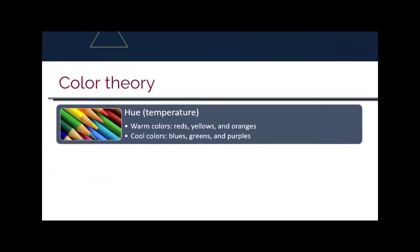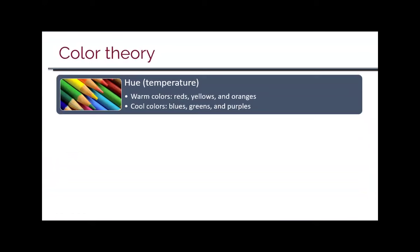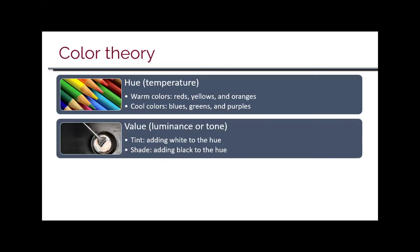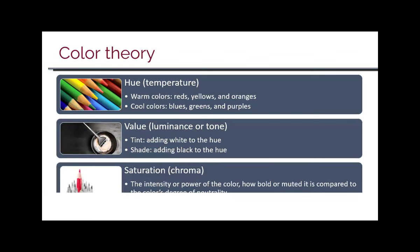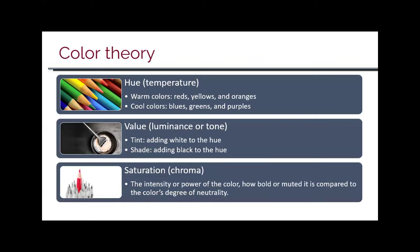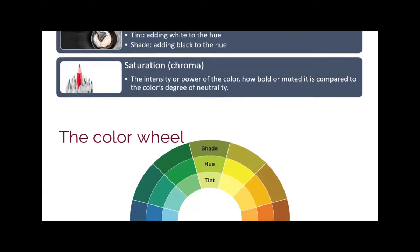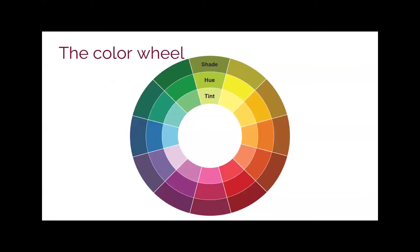The first topic is color. In color theory, 'hue' — sometimes called temperature — refers to warm or cool colors. Red, yellow, and orange are warm; blue, green, and purple are cool. 'Value' refers to tint or shade — a tint adds white to a color, a shade adds black. 'Saturation' is the intensity of the color. These settings are all accessible in PowerPoint's color options.